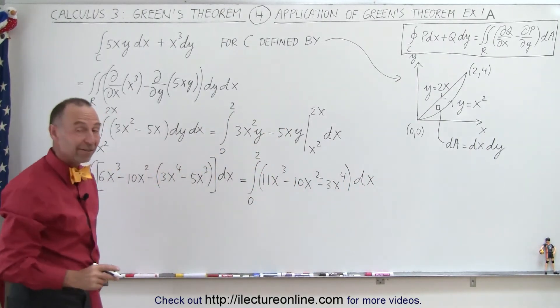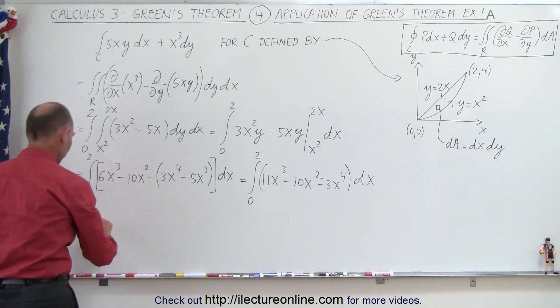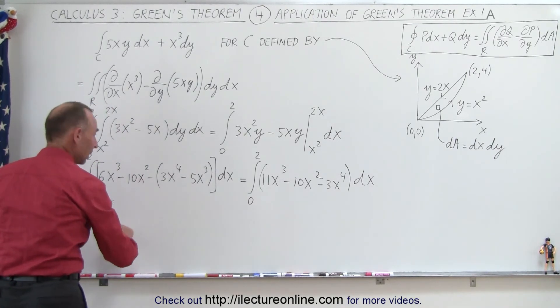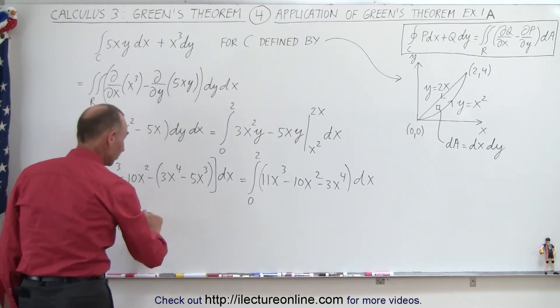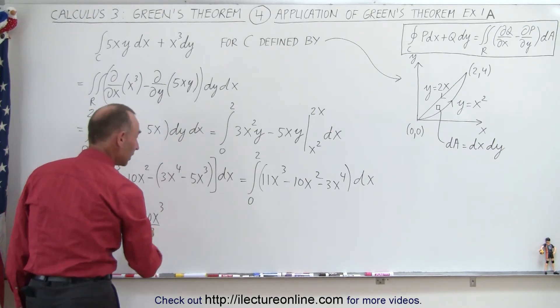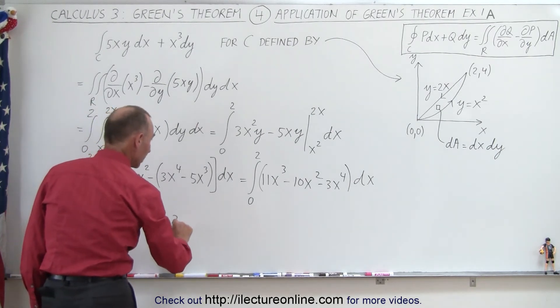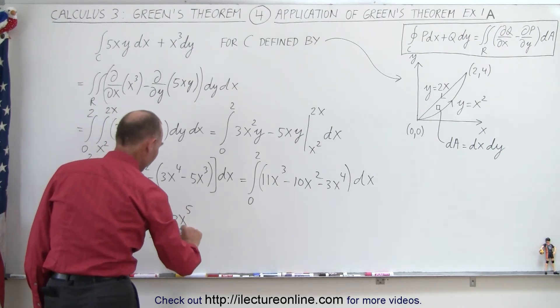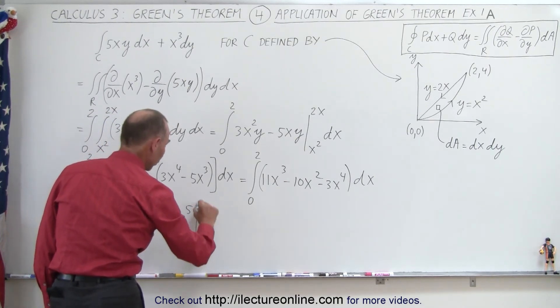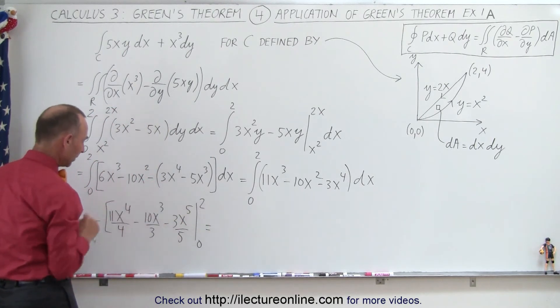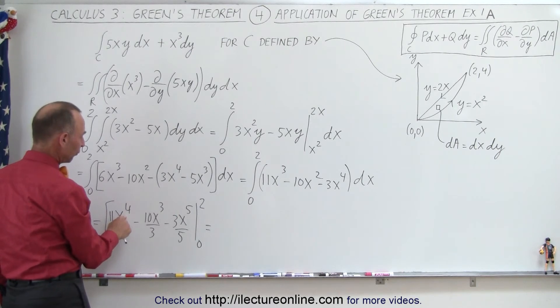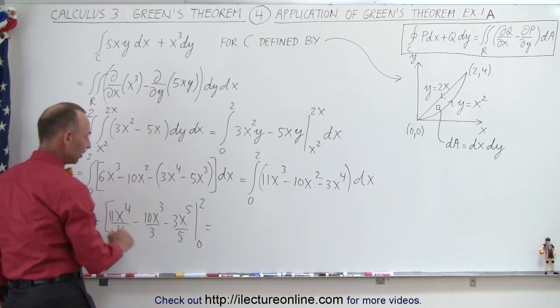So now we can easily integrate that, because now the variable is x. So this becomes equal to 11x⁴ over 4, minus 10x³ over 3, and minus 3x⁵ over 5, evaluated from 0 to 2. Notice when we plug in the lower limit, we get nothing. We only worry about the upper limit. x⁴, 2⁴ is 16, divided by 4 is 4, times 11 is 44.